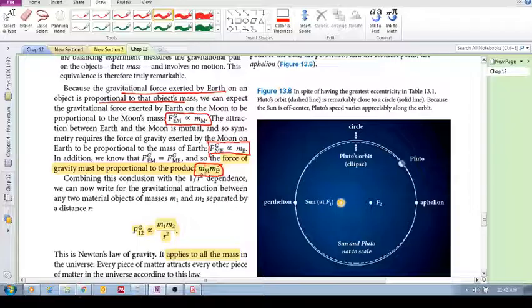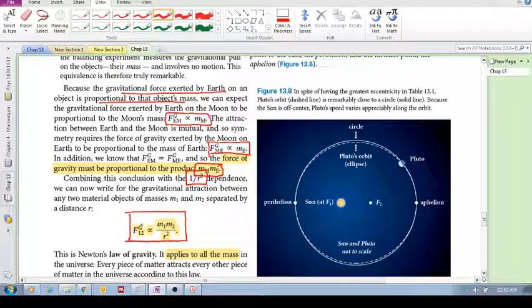So combining this idea together with the inverse square law dependence, we have this which we have seen before. Now, the gravitational force between two objects is proportional to the product of their masses divided by the square of the distance between their centers.